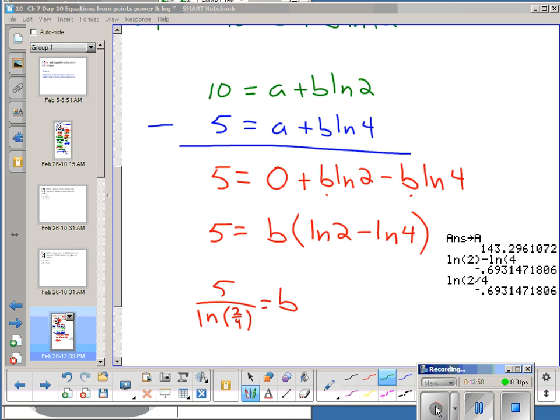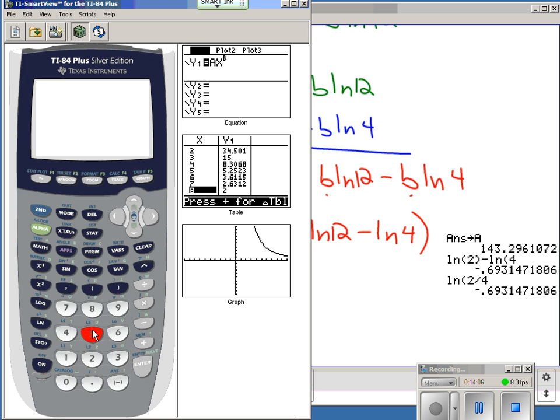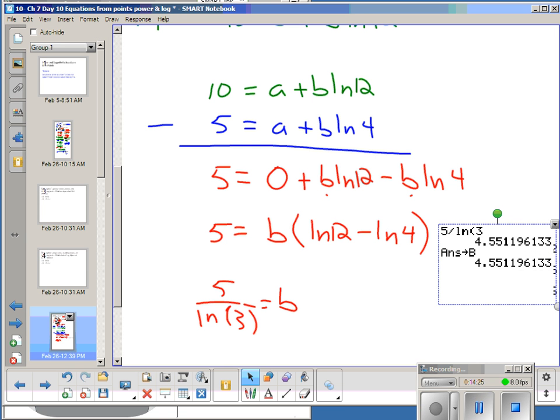Oops, I just noticed there's a mistake. Instead of LN of 2, that should be an LN of 12. So this should be an LN of 12, LN of 12, and that's going to give me LN of 3, actually. LN of 12 over 4 on the bottom. So let's try that again. We're going to take, let's start over 5, and we're going to divide by LN of 3. LN of 12 minus LN of 4, as long as you put that in your parentheses.